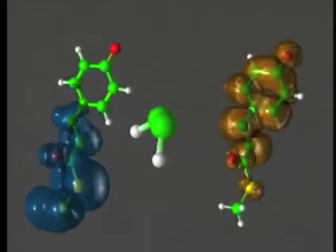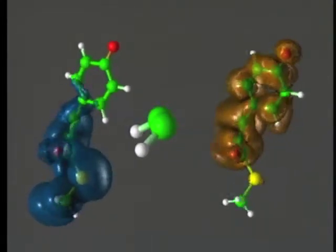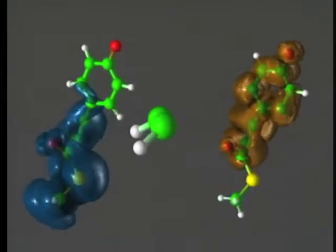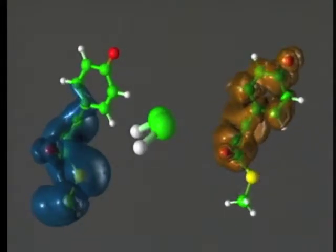Transition back to the ground state leaves the chromophore in the cis conformation. Note the dramatic shift in density that has taken place in the molecular orbitals.